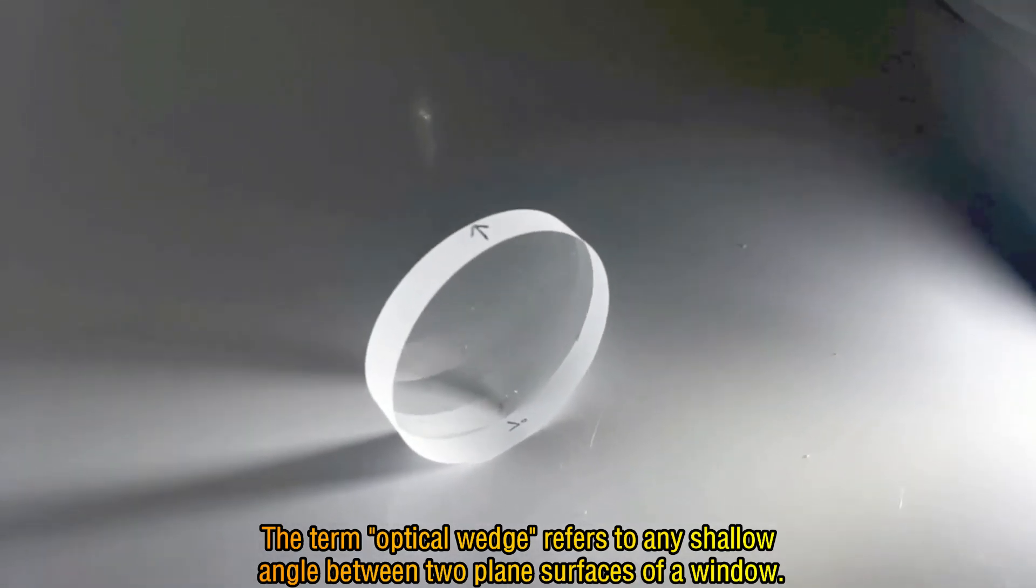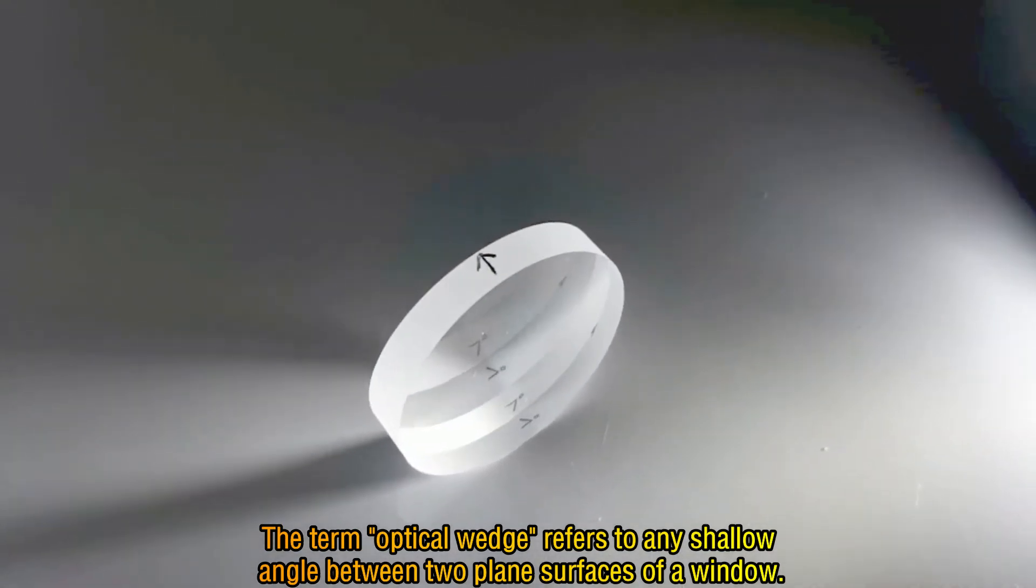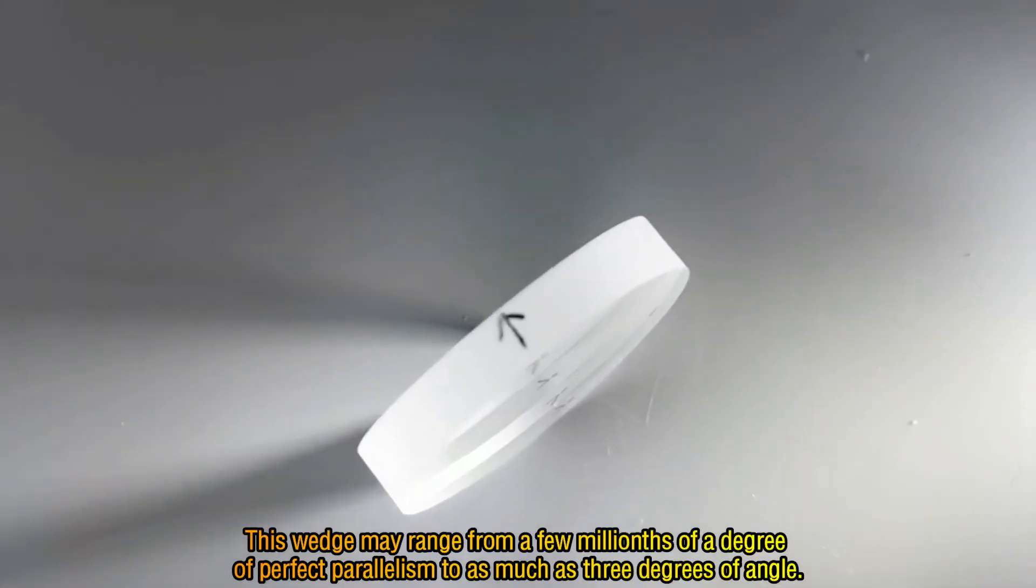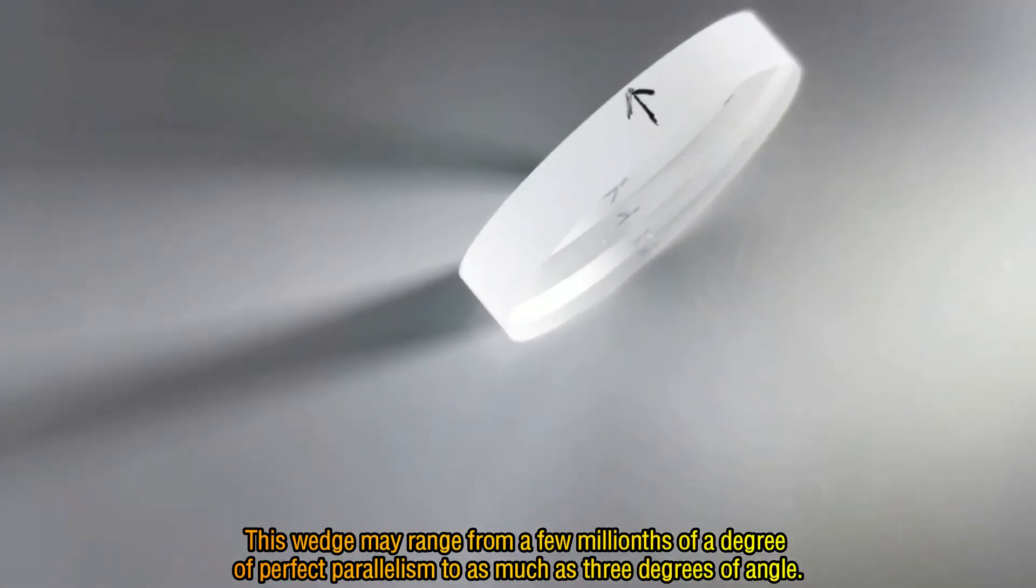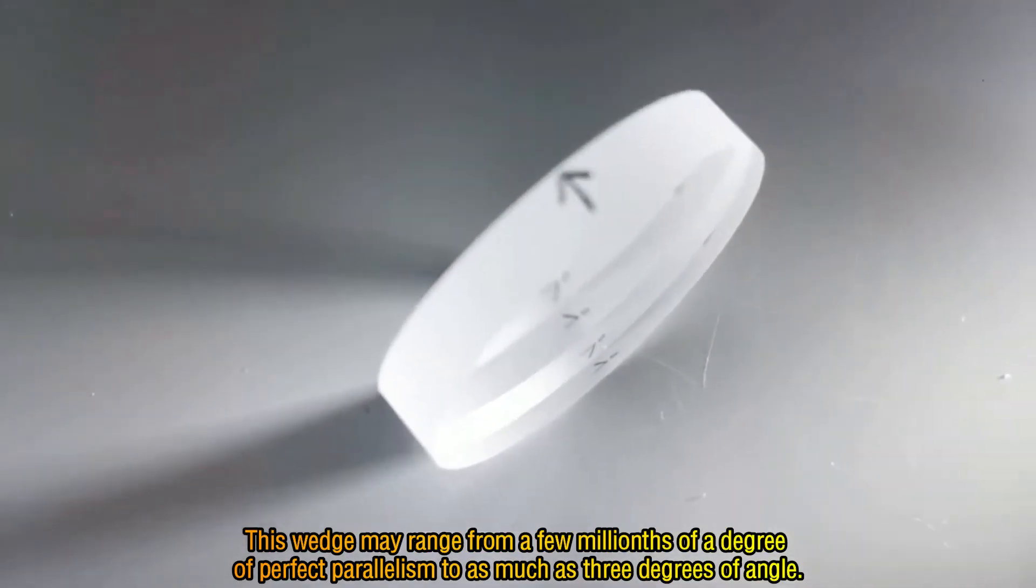The term optical wedge refers to any shallow angle between two plain surfaces of a window. This wedge may range from a few millionths of a degree of perfect parallelism to as much as 3 degrees of angle.